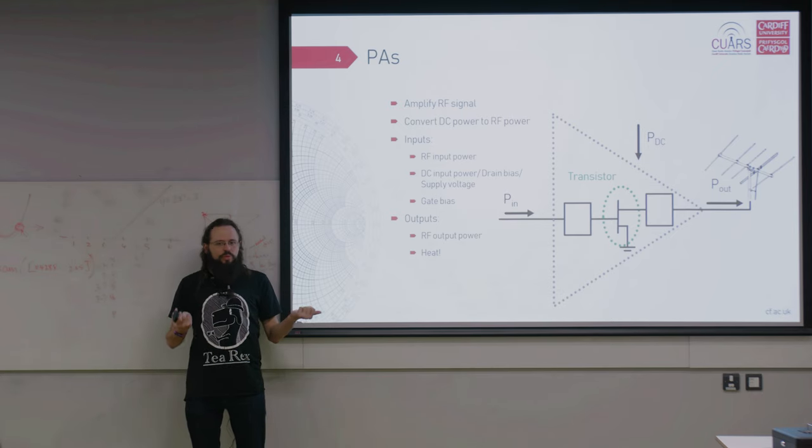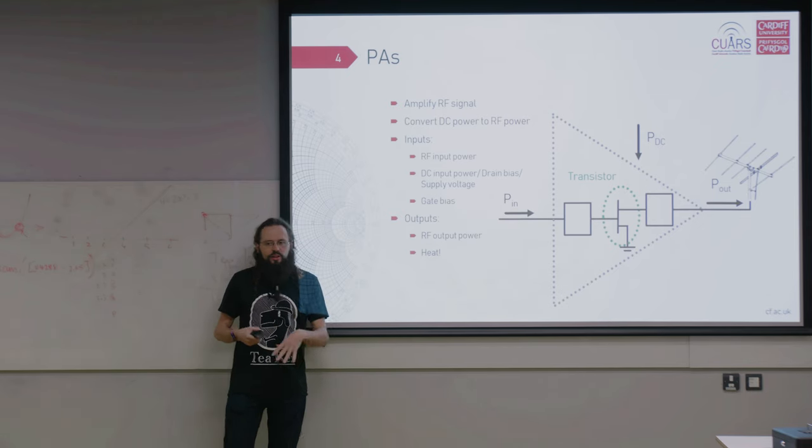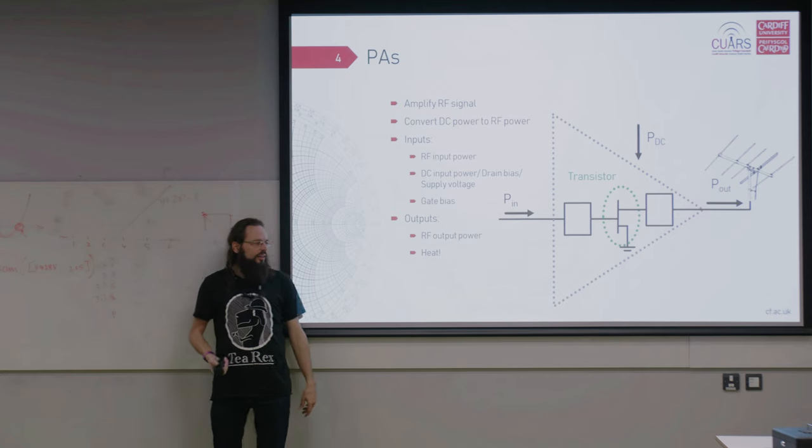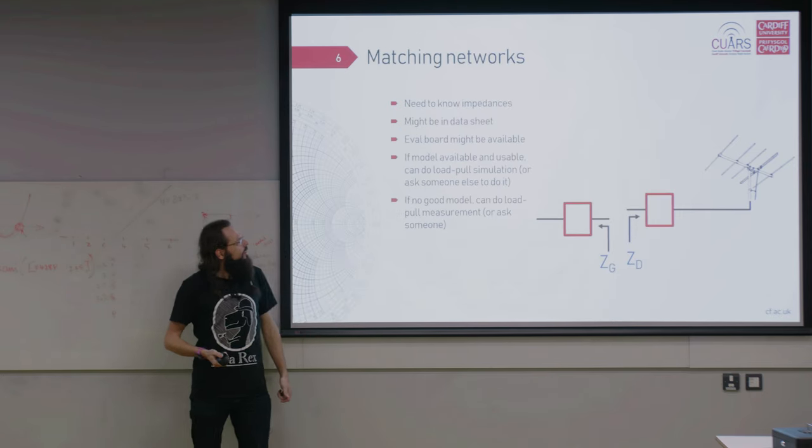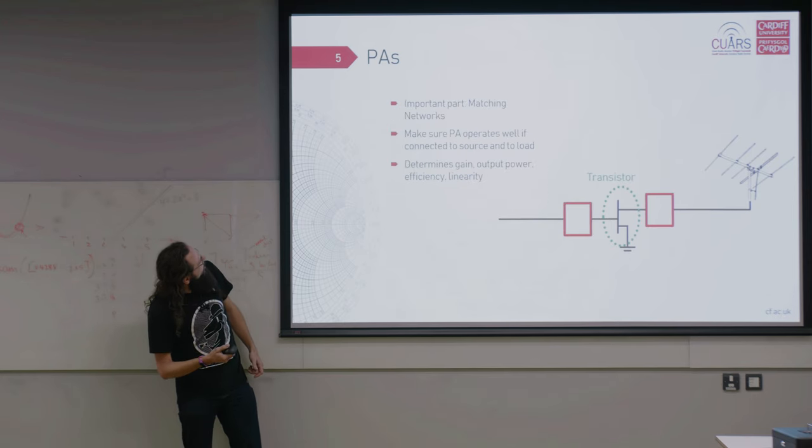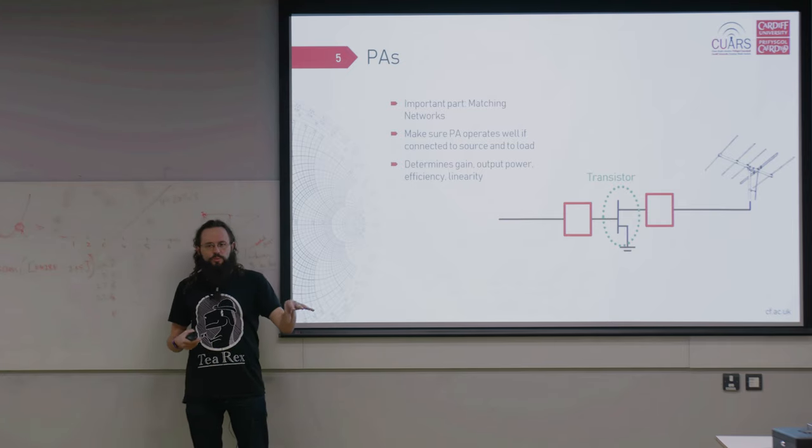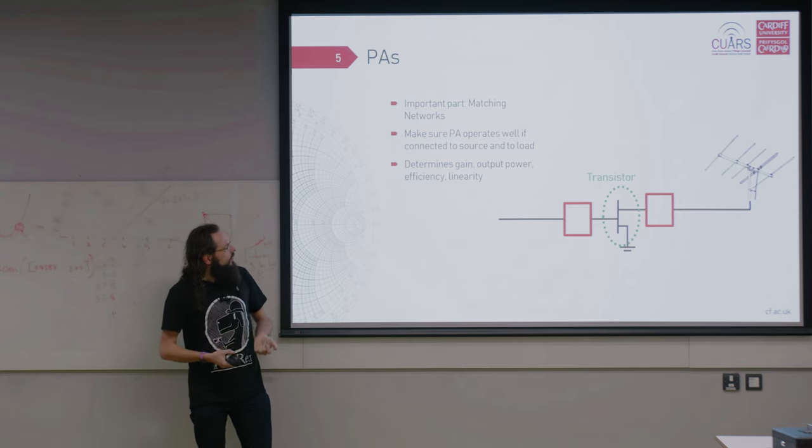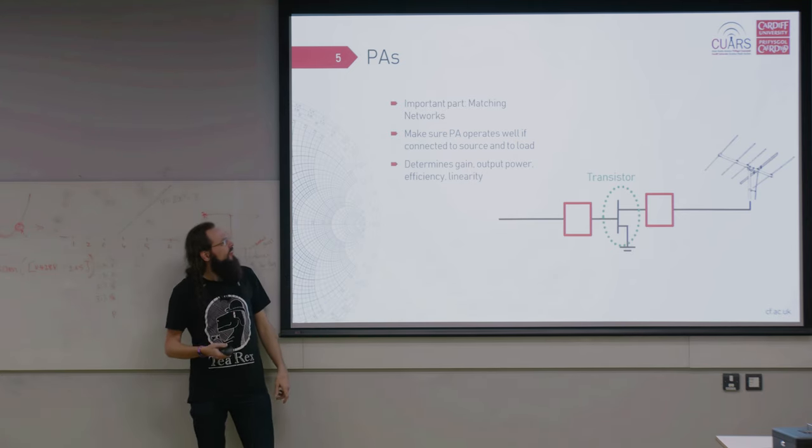PA is just there to amplify RF signals. As you probably all know you put RF input, you have a DC input and you get RF output and you get heat. Well a lot of heat sometimes. The important part of the PA is the matching networks because if you just put a PA, take a transistor, connect it to your antenna, it's probably not going to work. So these matching networks determine the gain, the output power efficiency, linearity, all of that. So they're fairly important one I might say.